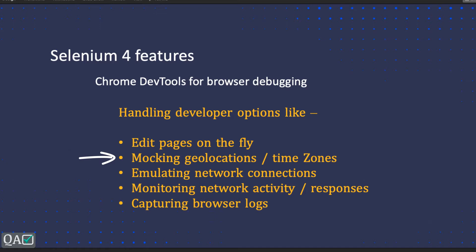Selenium 4 is providing a way to handle, automate, or emulate those kinds of things. Among those, one of the interesting features is how we can mock the geolocation or the time zone. The question comes: why do we need geolocation mocking or time zone mocking?